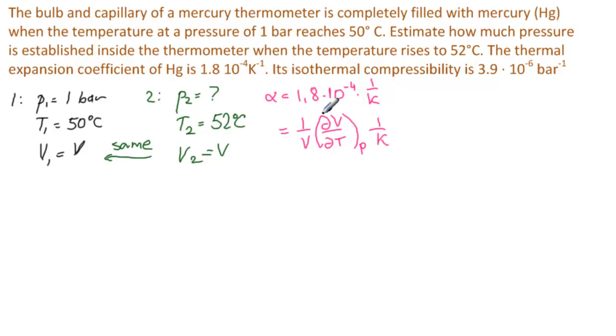On the other hand, this isothermal compressibility is usually denoted by beta. That's 3.9 times 10 to the minus 6, 1 over bar. And you have to remember the minus here.